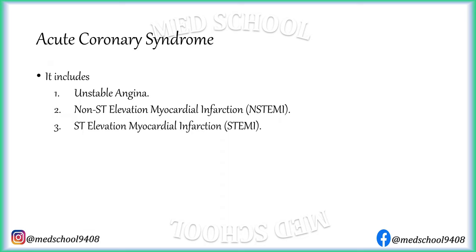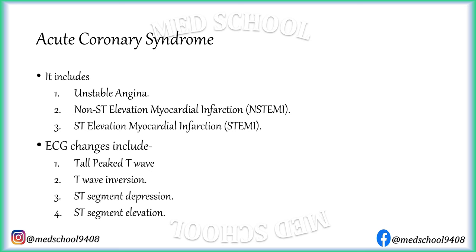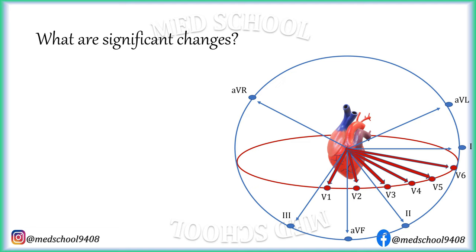ECG changes that suggest acute coronary syndrome include tall peaked T wave, T wave inversion, ST segment depression, and ST segment elevation. All ECG changes should fulfill two prerequisite conditions to be considered significant. First, changes should satisfy predefined criteria for the extent of each change. Second, these changes should be present in two or more contiguous leads.